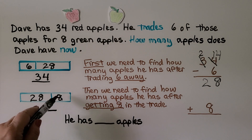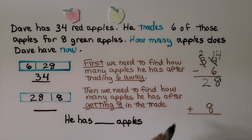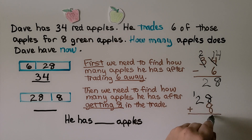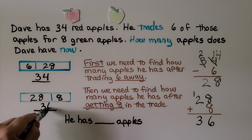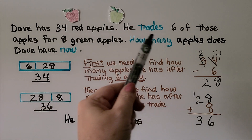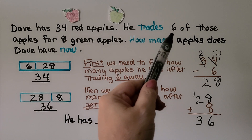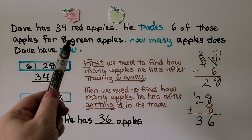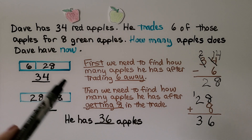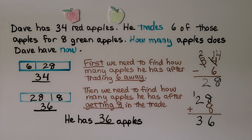Now we need to find how many apples he has after getting 8 in the trade. He's got 28 after trading away the 6, and now he's getting back 8, so we add 28 plus 8. 8 plus 8 is 16; we regroup the 10 and put the 6 in the ones place. 2 tens plus 1 ten is 3 tens — that means he's got 36 apples now. Note that he traded 6 red apples for 8 green apples, which is 2 more; he started with 34 and now has 36 — that's 2 more. 8 is 2 more than 6, and he has 2 more apples than he started with.